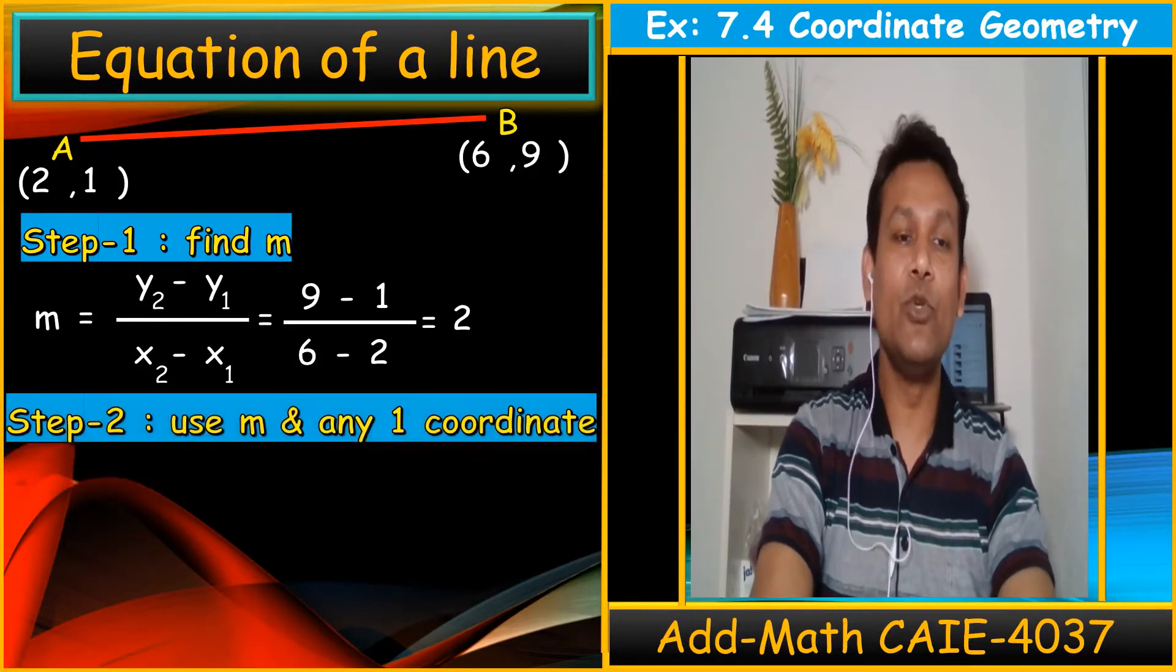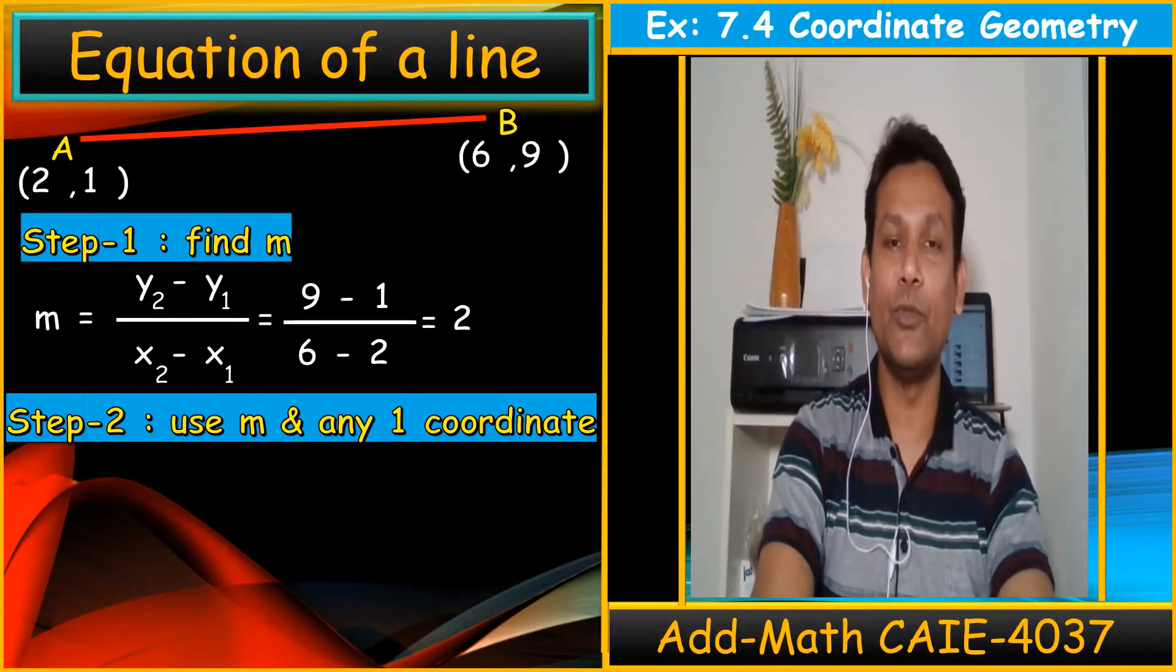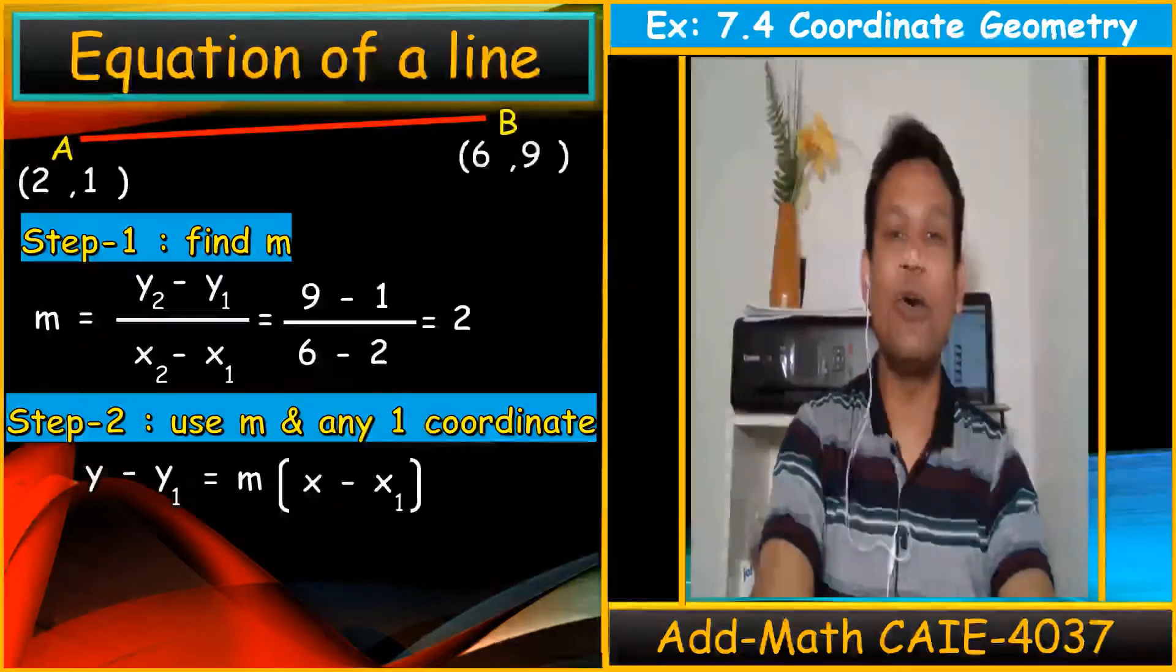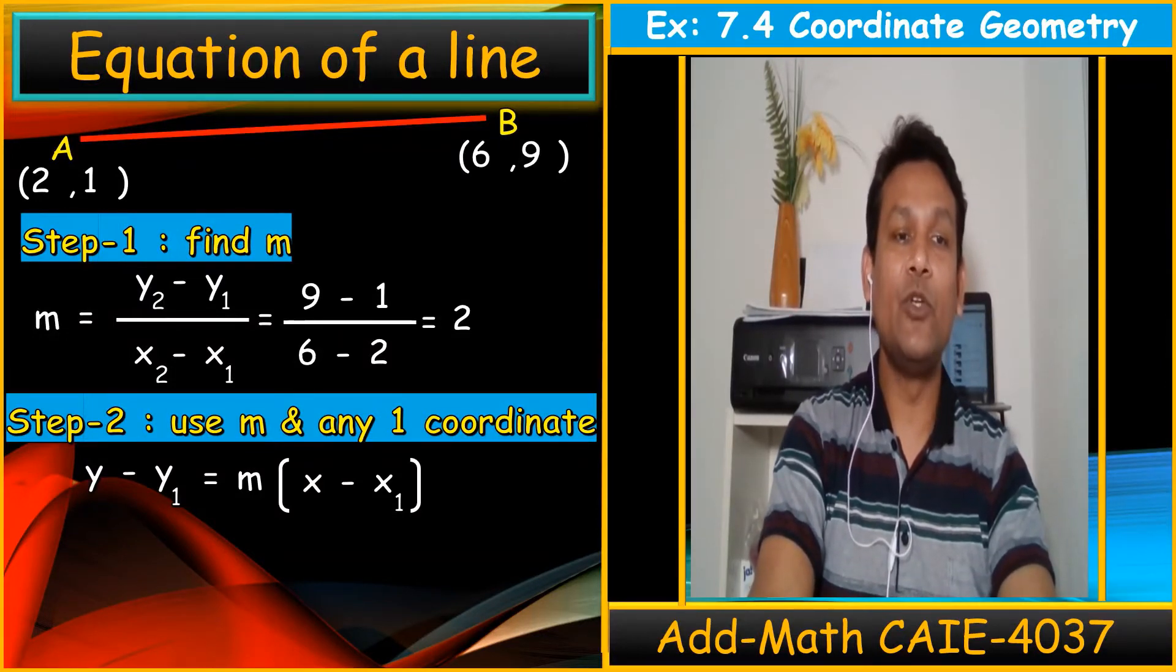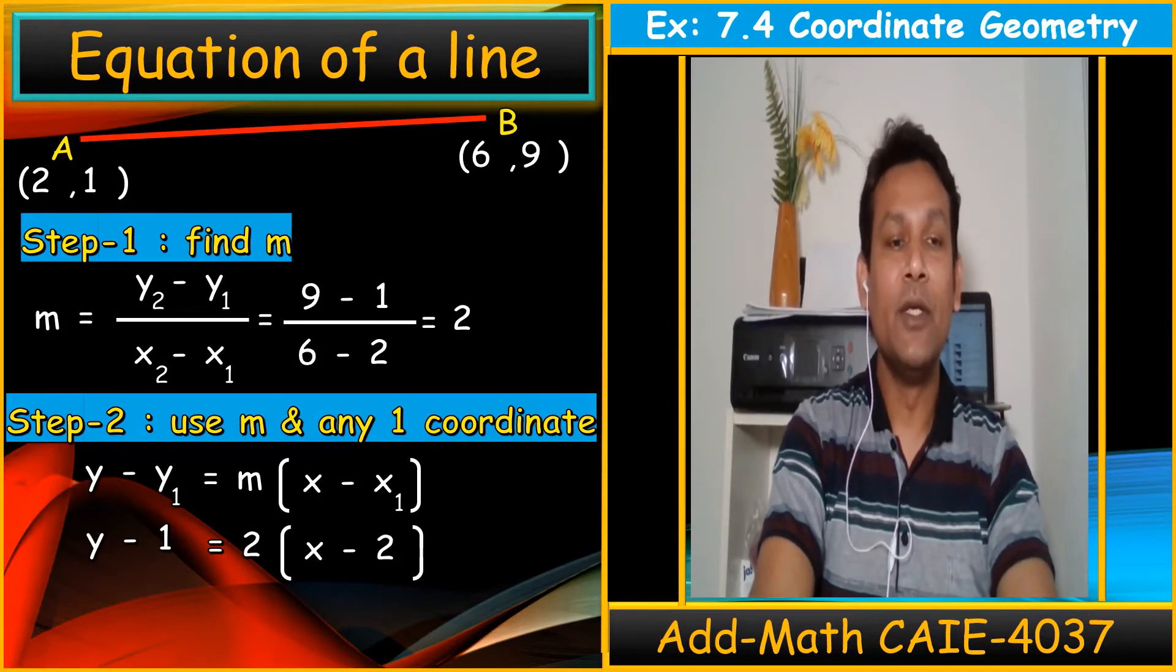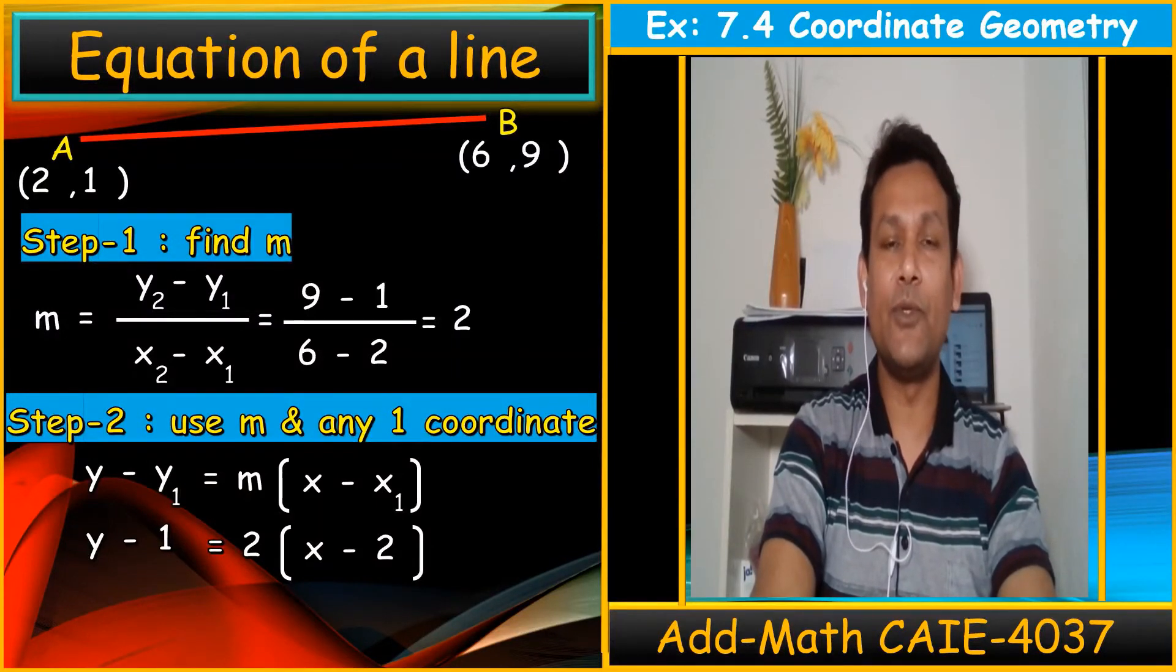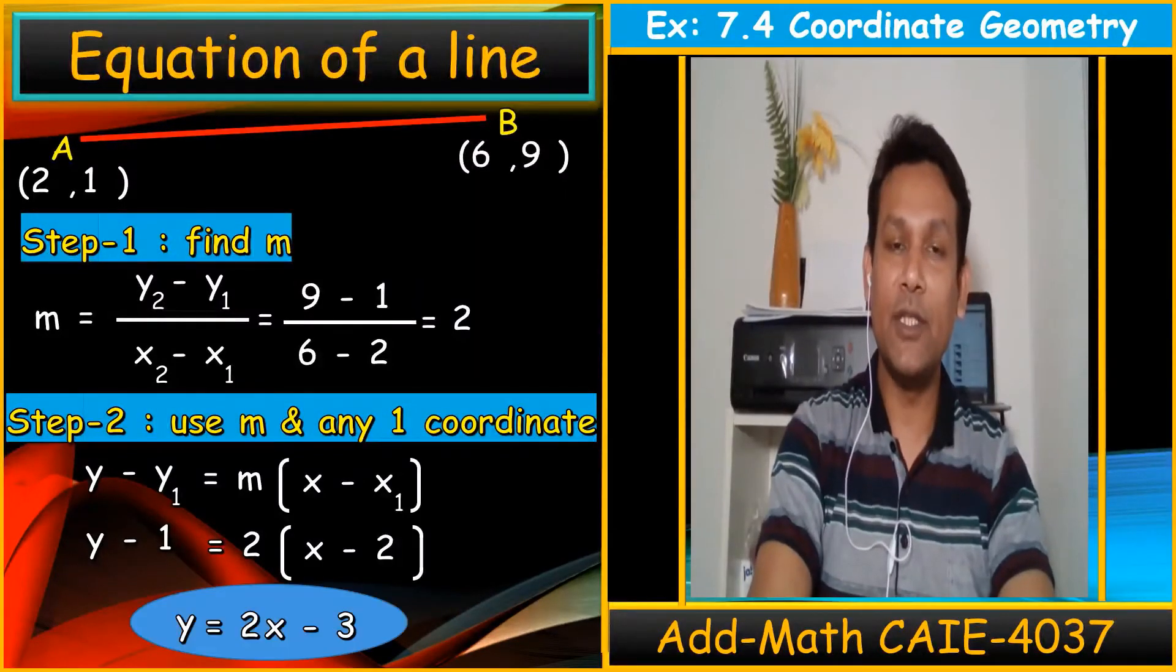When we know the gradient, step number two is using this gradient and any one of the coordinates—you can use (2,1) or (6,9), it's up to you. You put the values in this equation without finding the y-intercept, without finding c, and you can get the equation directly. So y minus y1, which is y minus 1, equals the gradient 2 times x minus 2. After substituting the values and making y the subject, the equation will be y equals 2x minus 3. This is the way we can find the equation of a straight line in additional math only.